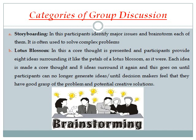In storyboarding, participants identify the major issues and brainstorm each of them in a particular story. In the lotus blossom technique, each lotus has at least eight petals. All participants have to identify the major issues, and for each major issue, they write down at least eight ideas. That method is called the lotus blossom.